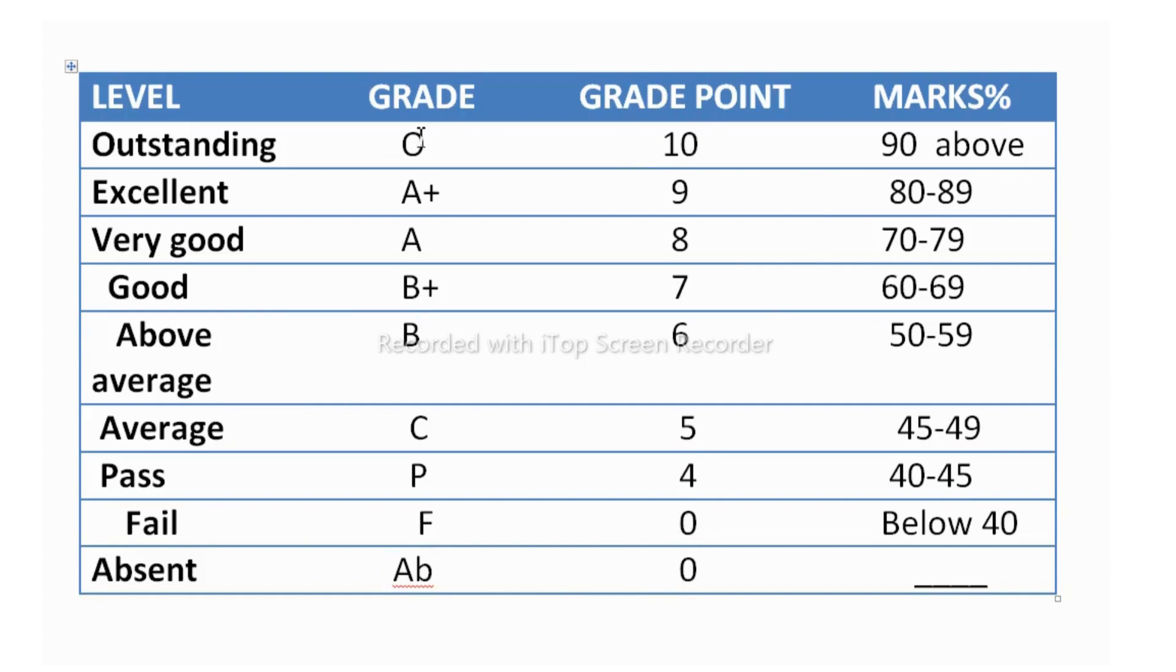Now how you will get these grade points and grade based on the marks? If you get 90 and above marks in your exam, then you will get O grade. That's 10 grade point. If you get 80 to 89, that will be 9 grade point and you will get A plus.